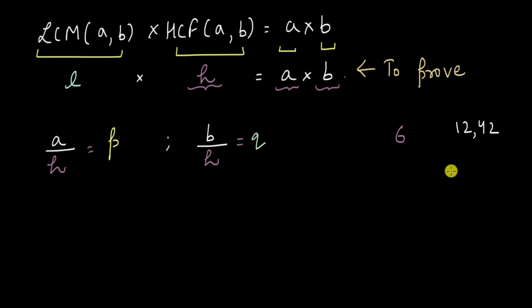So in this example these numbers for us are 2 because 12 divided by 6 would give me 2 and 42 divided by 6 would give me 7. Now here comes the interesting part.